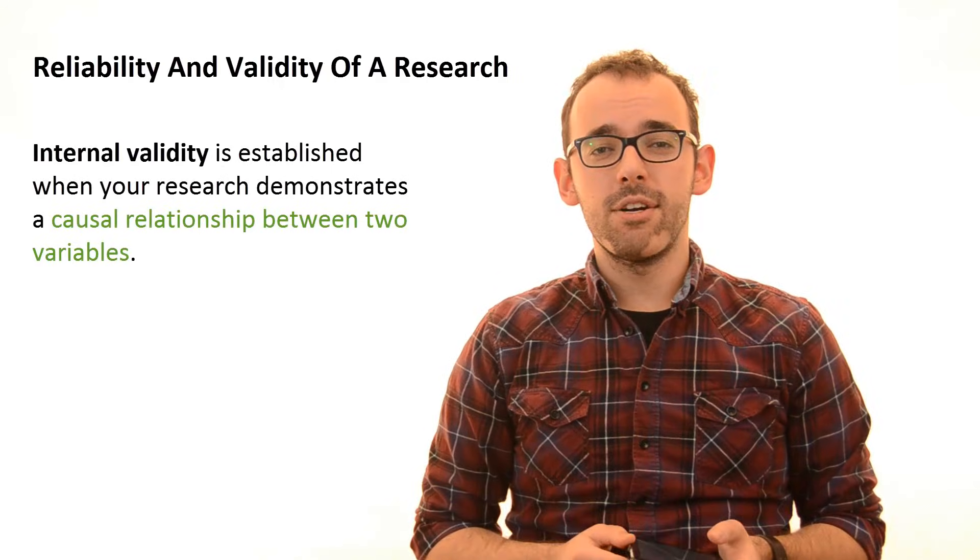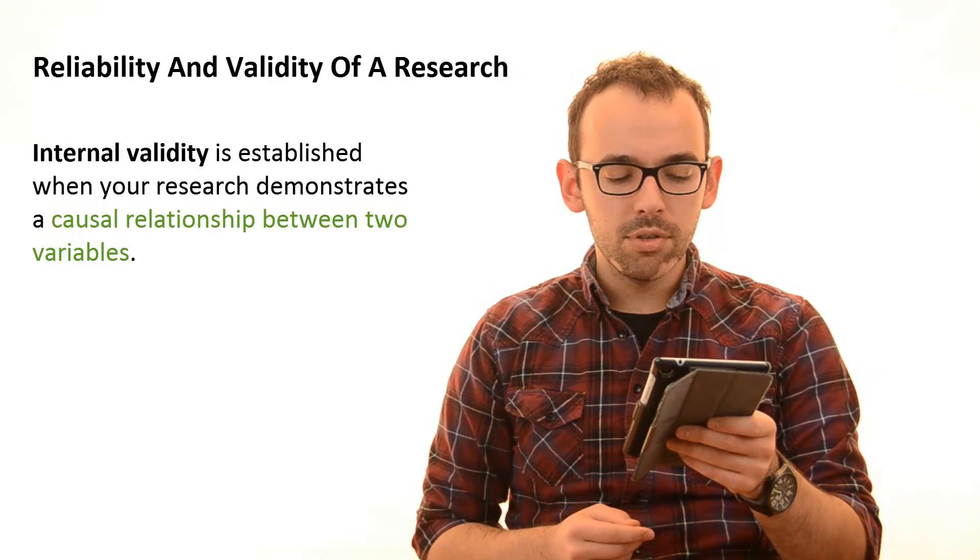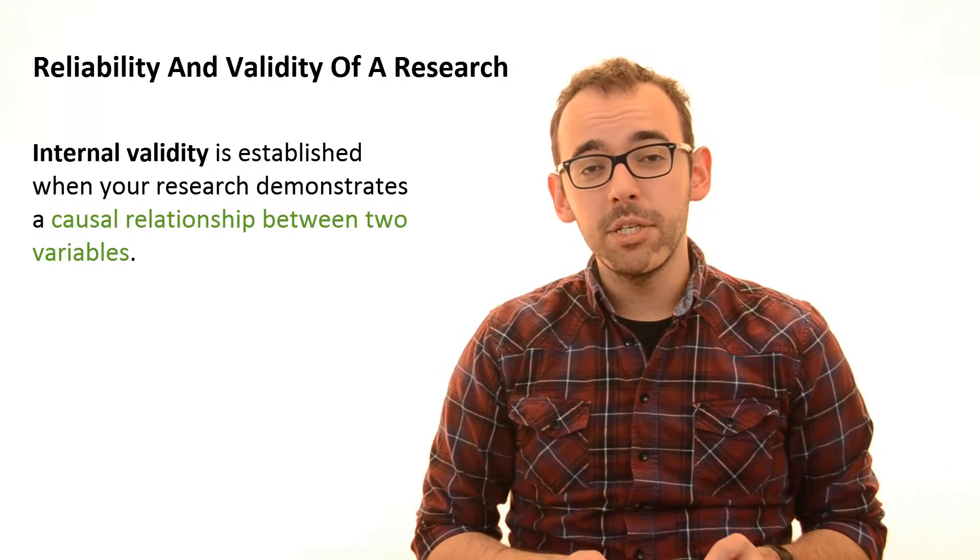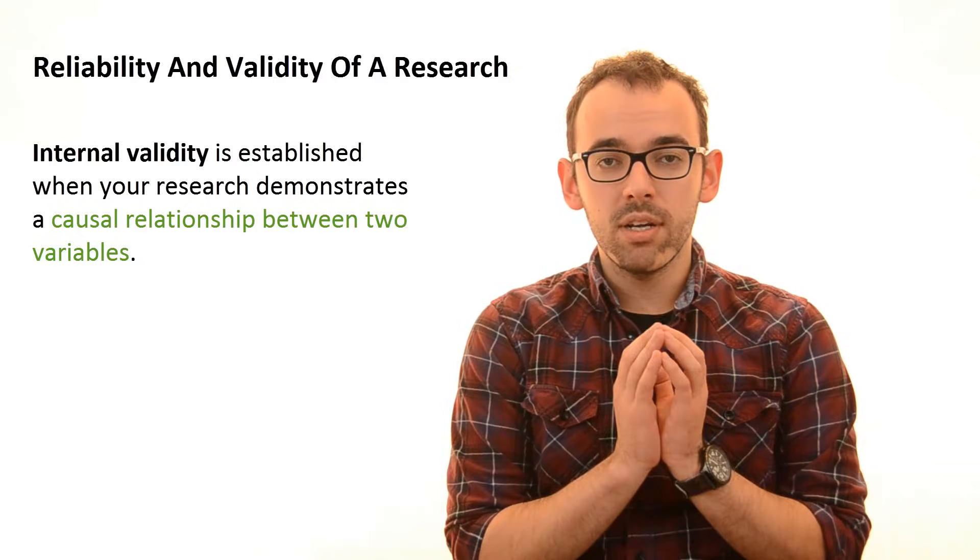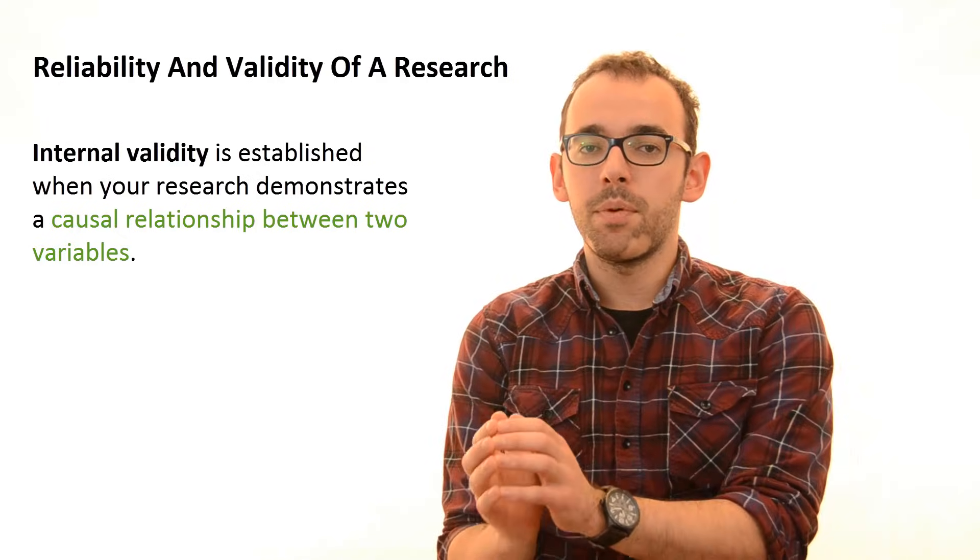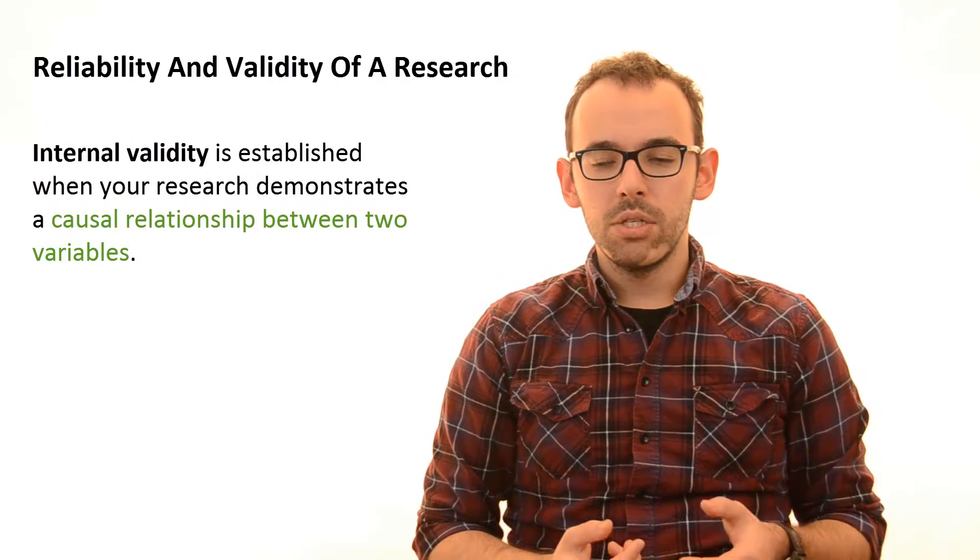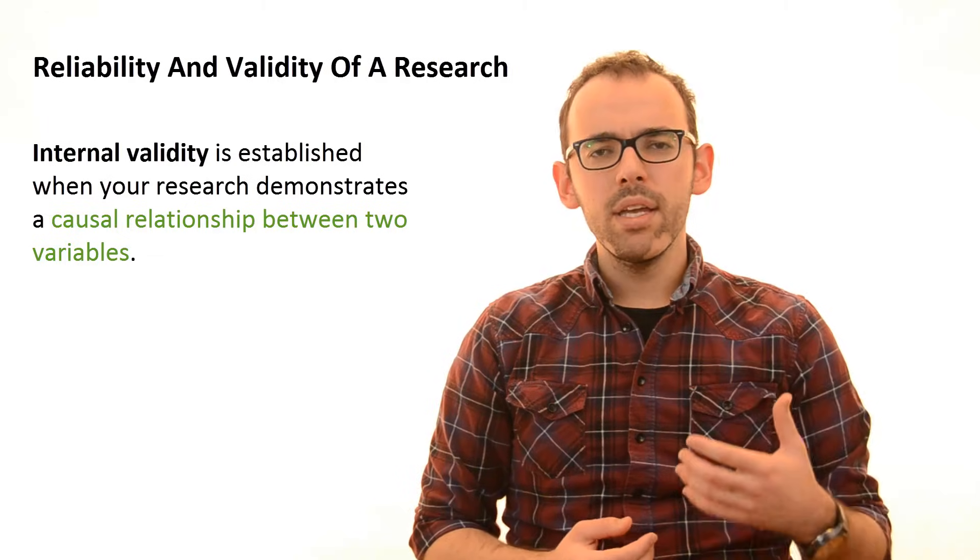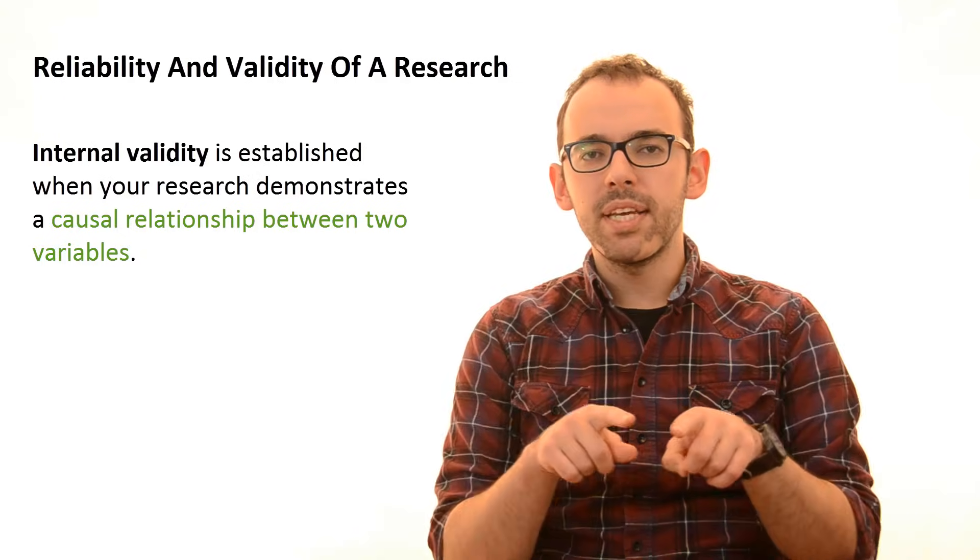Second of all, we have the internal validity. Internal validity is established when your research demonstrates a causal relationship between two variables. And this is especially true if our research strategy is experiment. Because in experiment, we clearly have to define the independent variable and dependent variable. And then we are examining the relationship between these two. So what internal validity is asking about is, why are you making this assumption from the early beginning that this relationship is existent?